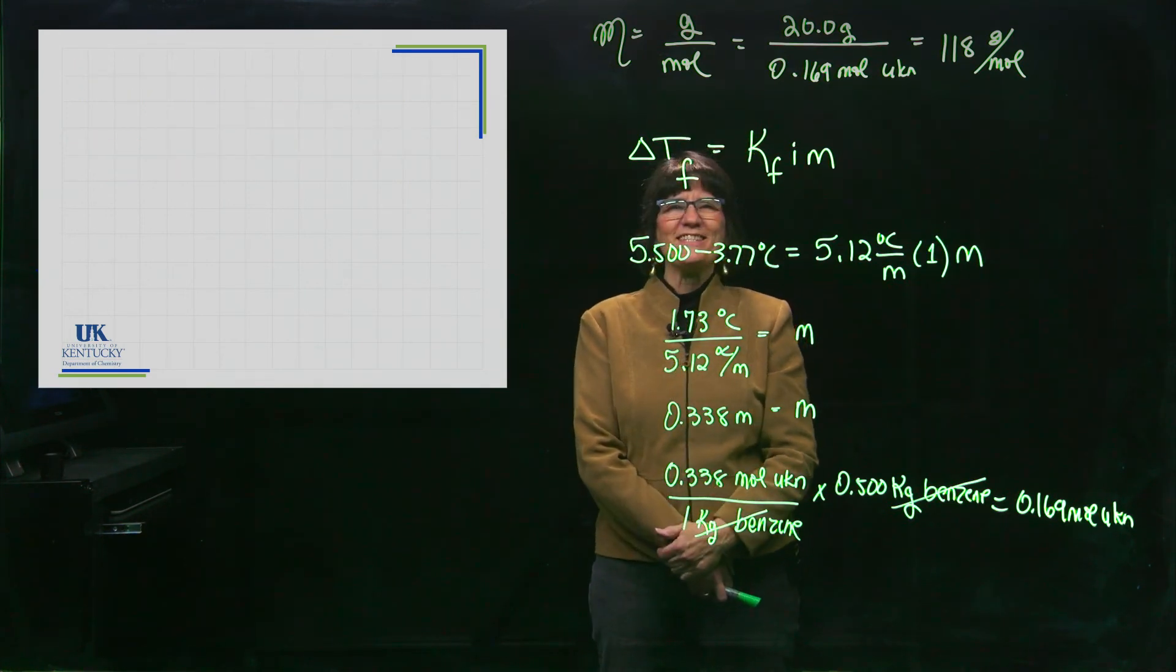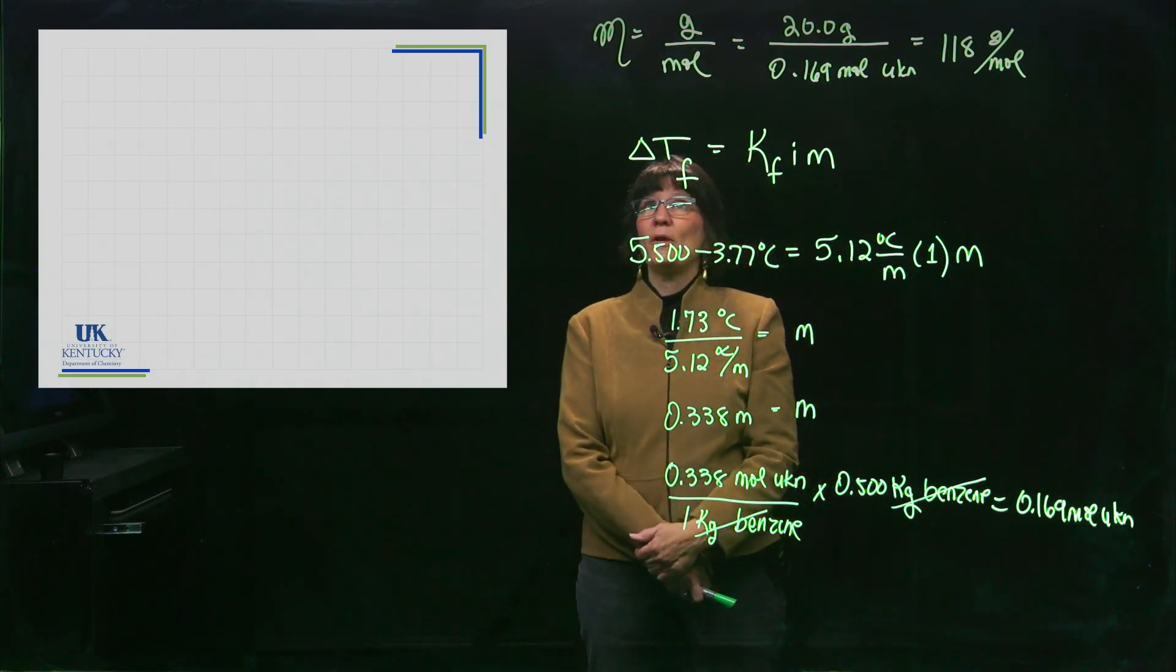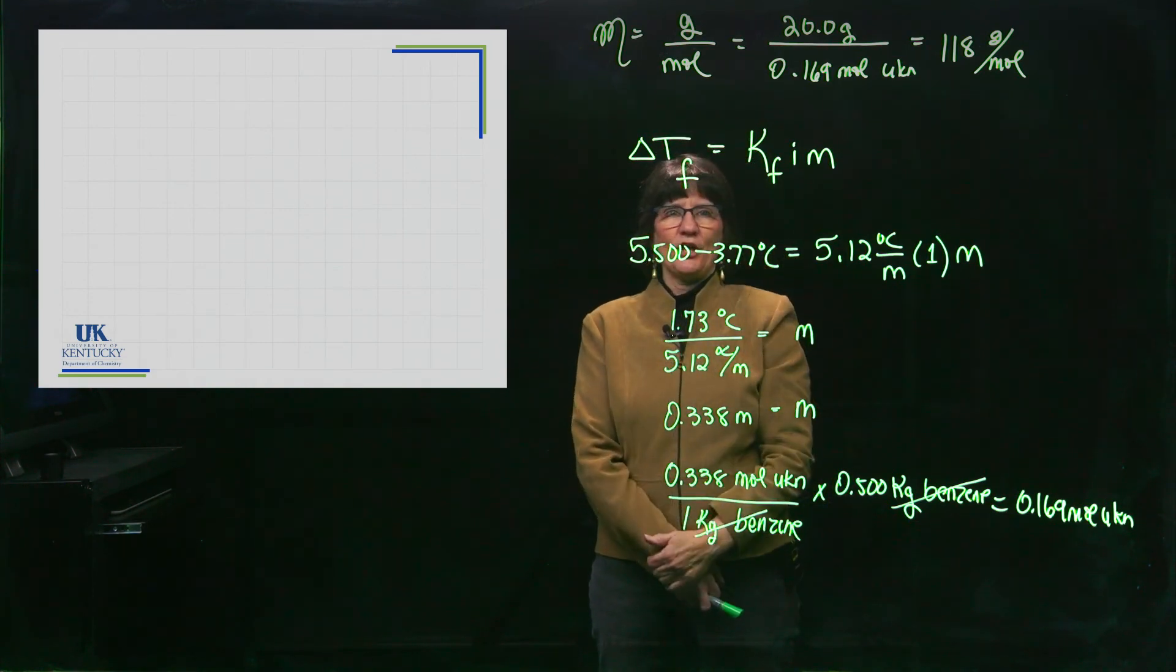All right. So that's the end of how to use colligative properties to determine the molar mass of an unknown.